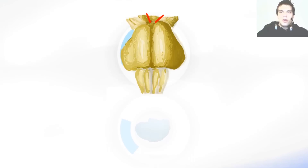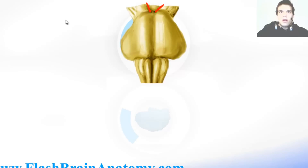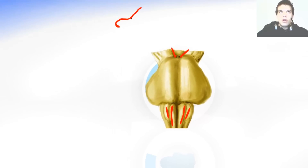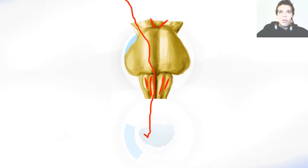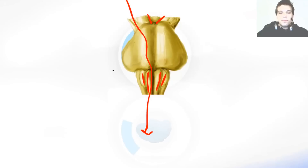Right below that are the pyramids of the medulla oblongata and the olivary body. The olivary bodies are the nuclei, and the pyramids are the elevations caused by the corticospinal tract — which comes from the cortex of the brain and goes down to the spinal cord. The pyramid is found between two sulci: the anterior median sulcus and the anterolateral sulcus that lies between the olivary body and the pyramid.